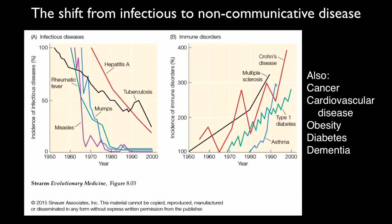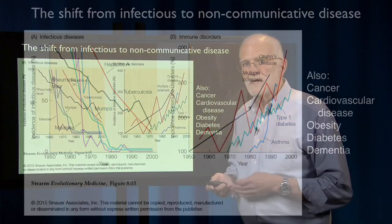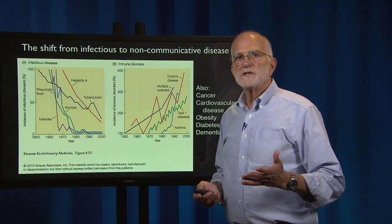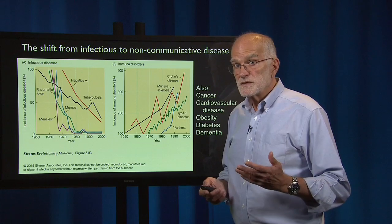Concurrent with these nutritional and demographic changes, there has been a big shift from infectious to non-communicable disease. During the last half of the 20th century, the incidence of diseases like rheumatic fever, hepatitis A, measles, mumps, and tuberculosis declined strikingly. Meanwhile, the incidence of immune disorders in the United States climbed considerably — and this increase was also found for cancer, cardiovascular disease, obesity, diabetes, and dementia. There has been a huge shift in the kinds of diseases that medicine must deal with in post-transitional societies.